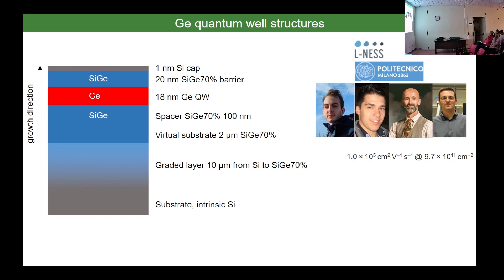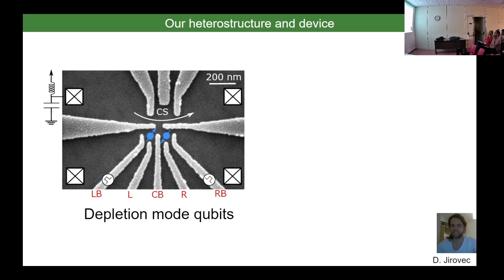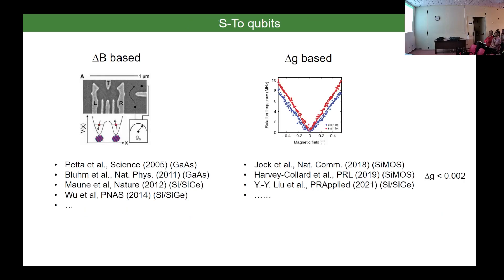Both Giovanni and Giordano grow on (100) orientation, which is easier. Our whole society is based on silicon (100), which seems to be the highest quality. Daniel Loss predicts that growing on (110) should give even stronger spin-orbit, but it seems not easy to grow high-quality material on (110). These (100) structures give high-quality materials and that's what we're working with.